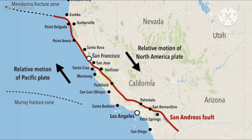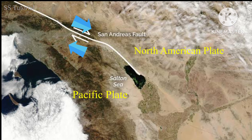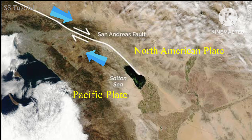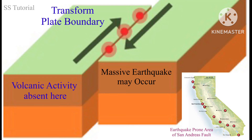As an example, we can mention the San Andreas Fault, which was formed due to the sliding movement of the Pacific plate and the North American plate. There is no evidence of volcanic eruption at the transform plate boundary, but massive earthquakes can be seen here.